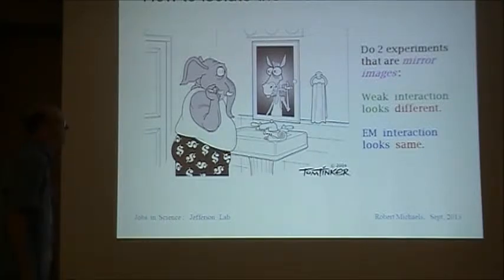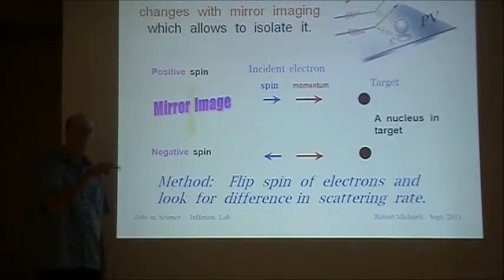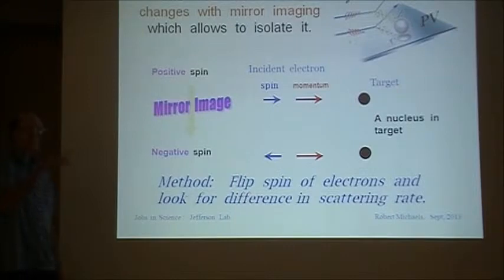How would you isolate the weak interaction? It turns out that the weak interaction looks different when you do two experiments which are mirror images of each other. So you want to do two experiments that are mirror images. The weak interaction will look different, but the competing electromagnetic interaction, which is a lot larger, will look the same. So if you subtract the two experiments, you can pull out the part that's from the weak interaction. The weak interaction changes with the mirror imaging and that allows you to isolate it. The way you make a mirror imaging is you use what's called a spin of the electron. The electron is moving, but it's also spinning. If you flip the direction of the spin, that's like looking at a mirror image.